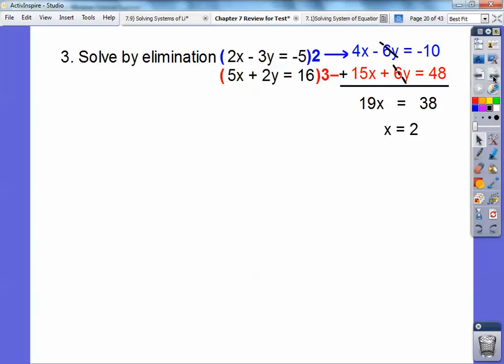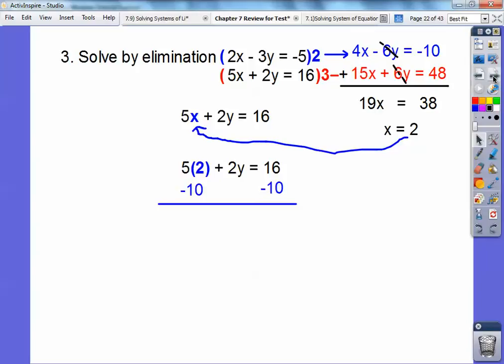So you get 19x equals 38. So 19 goes into 38 two times. And I plugged in 2 into the bottom equation. 5 times 2 is 10. So subtract 10. 2y equals 6. So y equals 3. X always comes first.